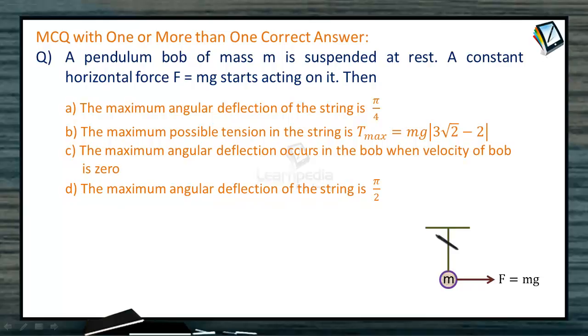So this is a rigid support. This bob is suspended and is pulled by a force F equals Mg. What will happen? The string or the bob will move from here to another position. So new position will be - this is the initial position. New position will be somewhere suppose like this. Now the bob is here. This angle say is theta.